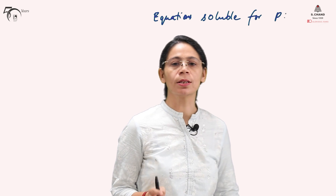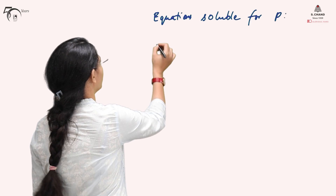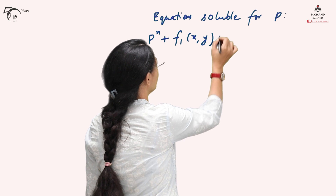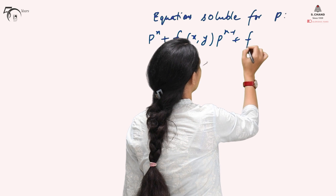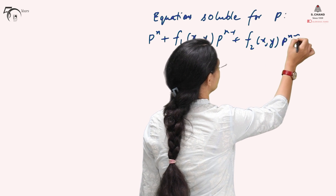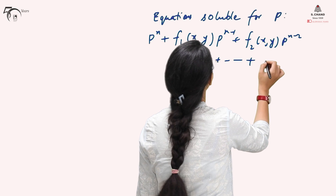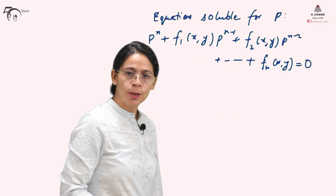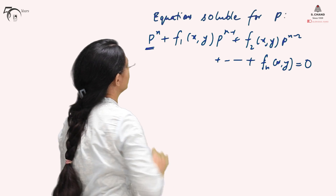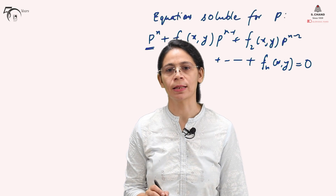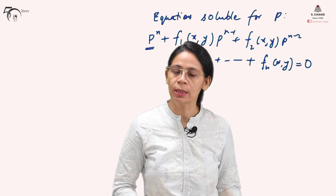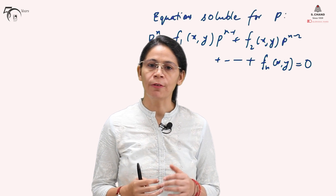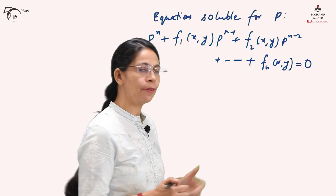As we said, this is of first order but not of first degree. The general form can be written as P^n + F1(x,y)·P^(n-1) + F2(x,y)·P^(n-2) + ... + Fn(x,y) = 0. Since P is the derivative and it has nth power, it is called degree n — a first order differential equation of degree n. To solve this, we factorize the equation into linear factors in P.